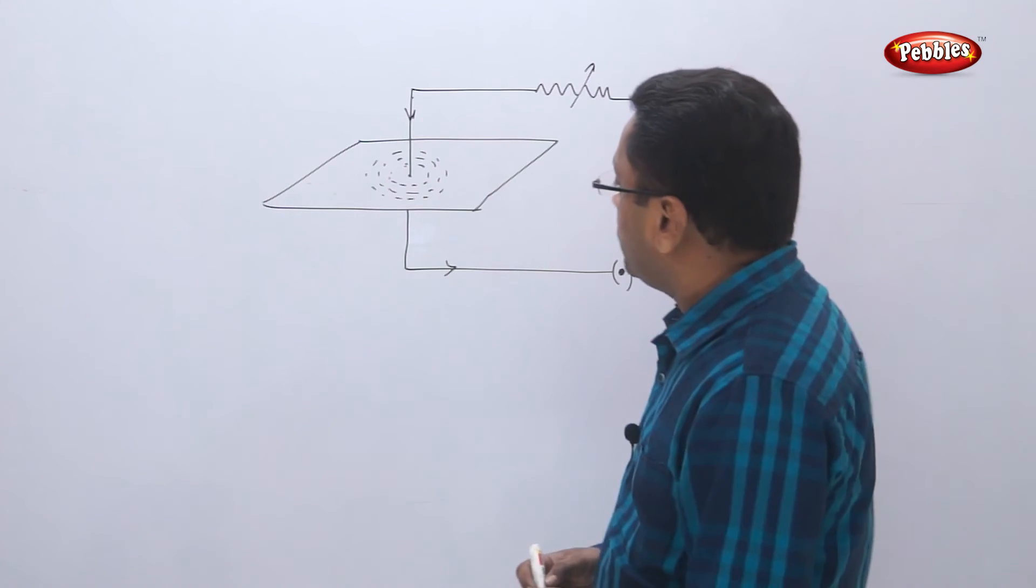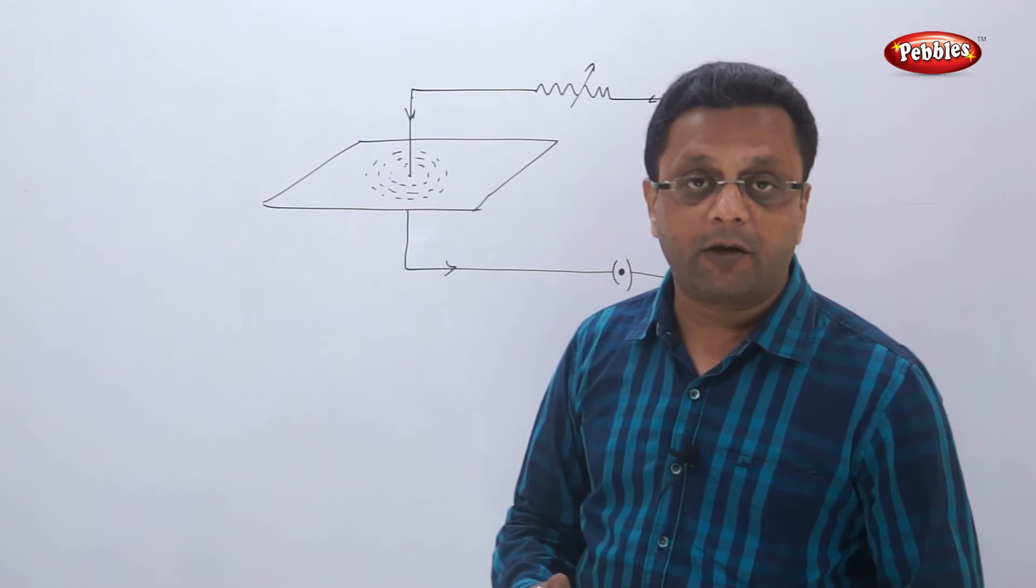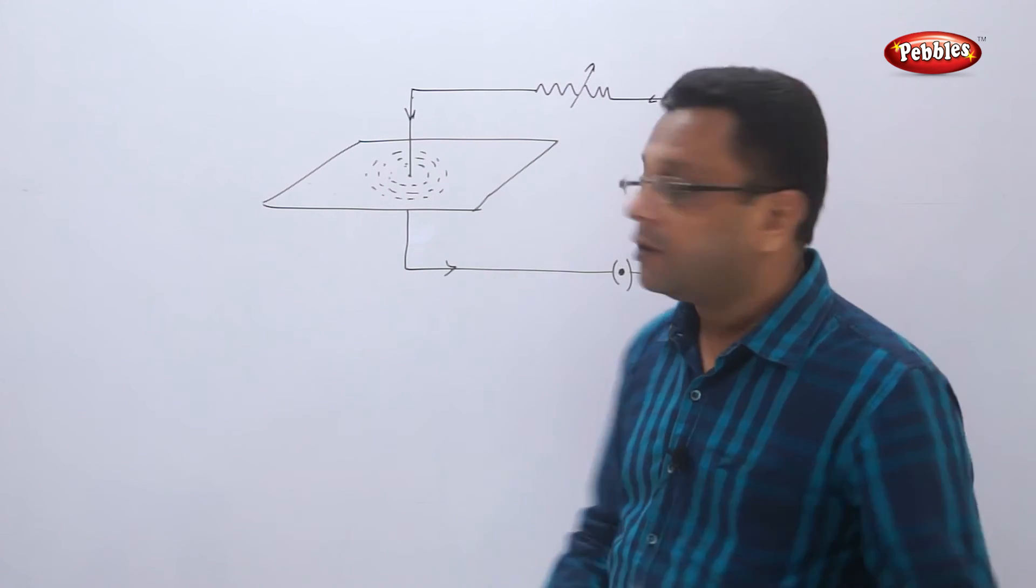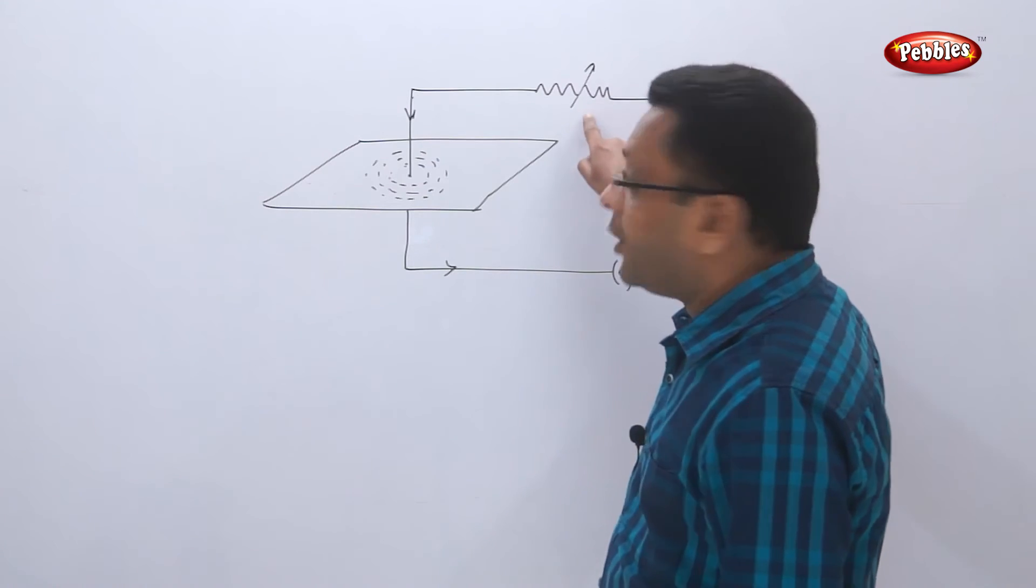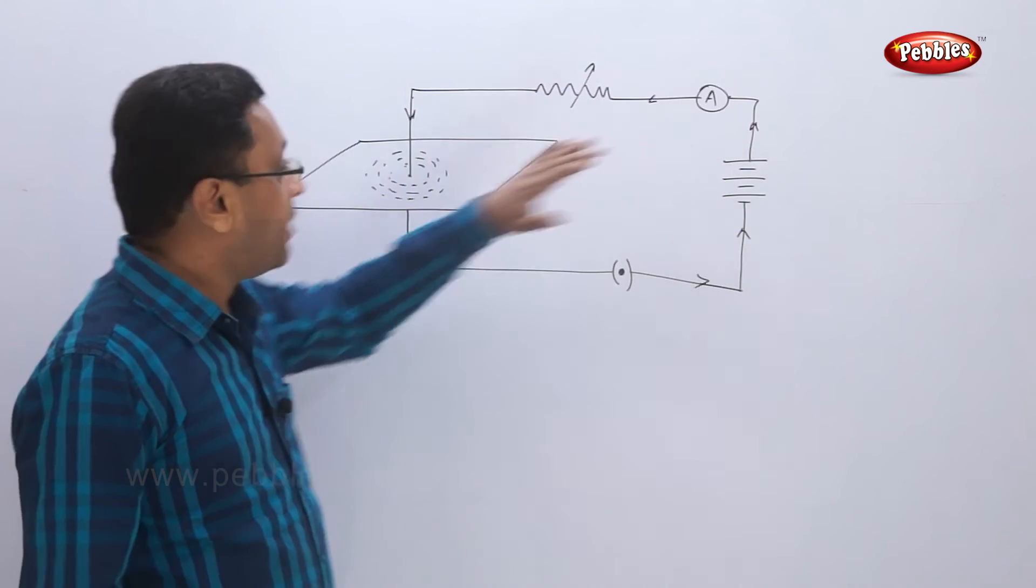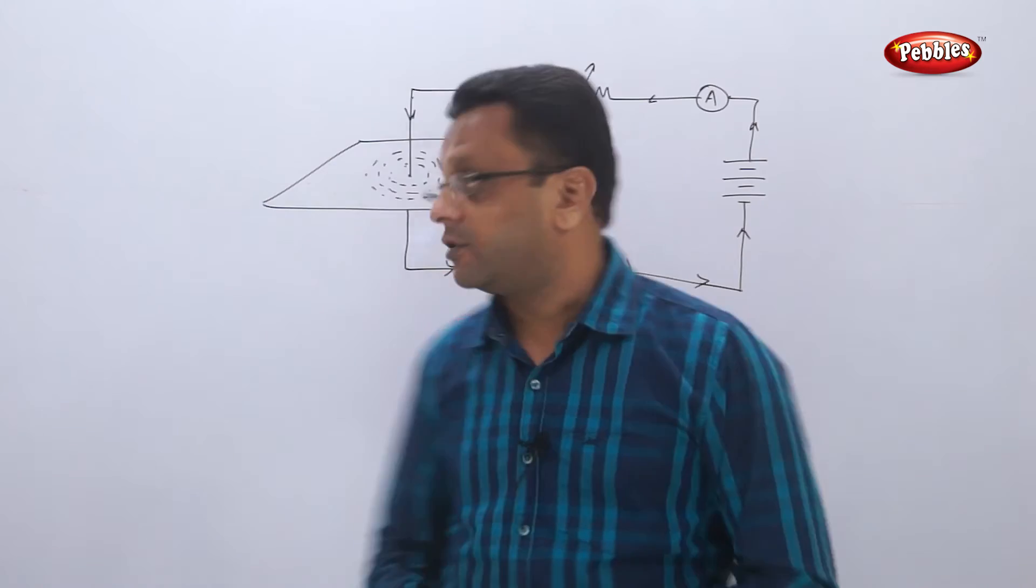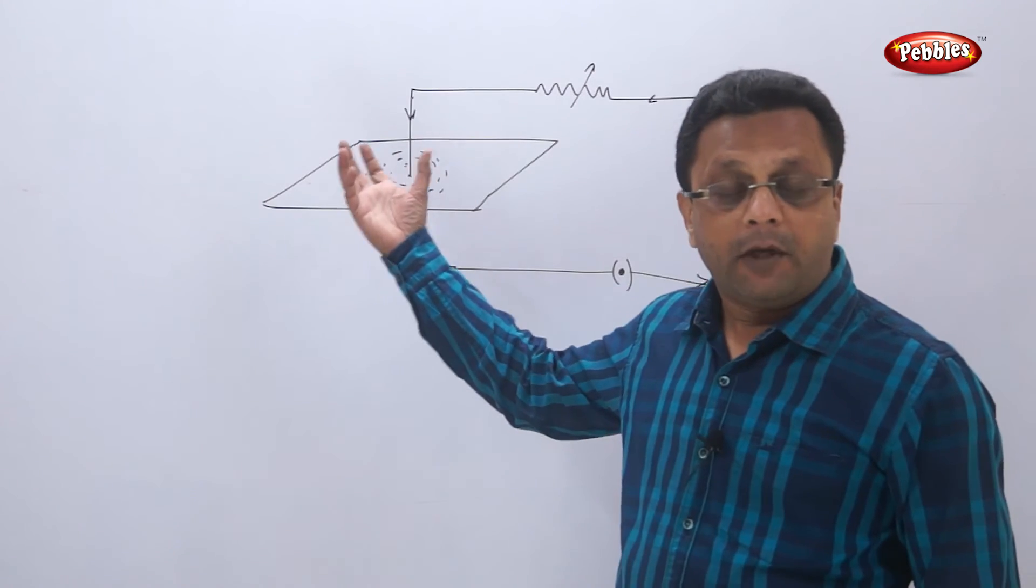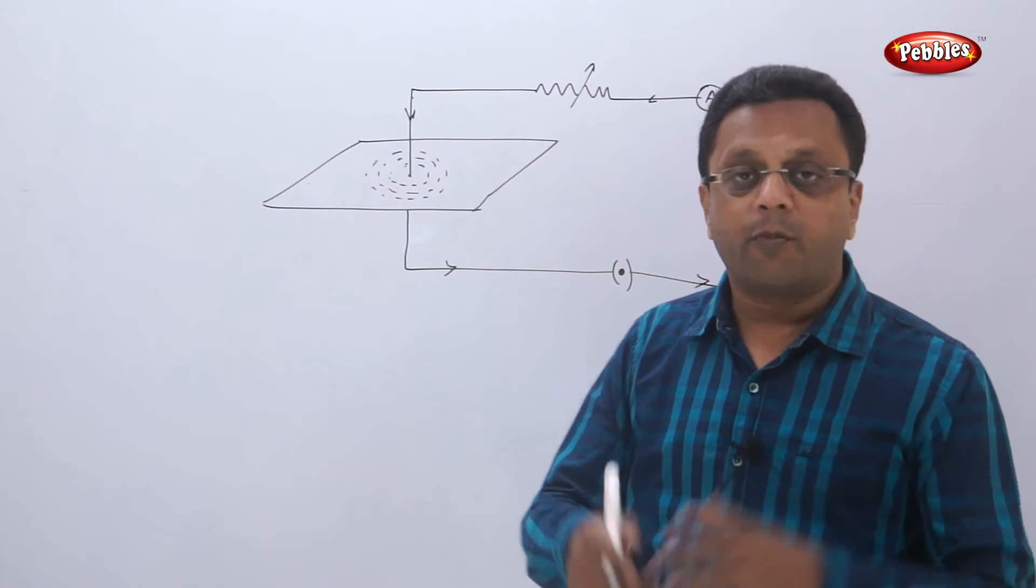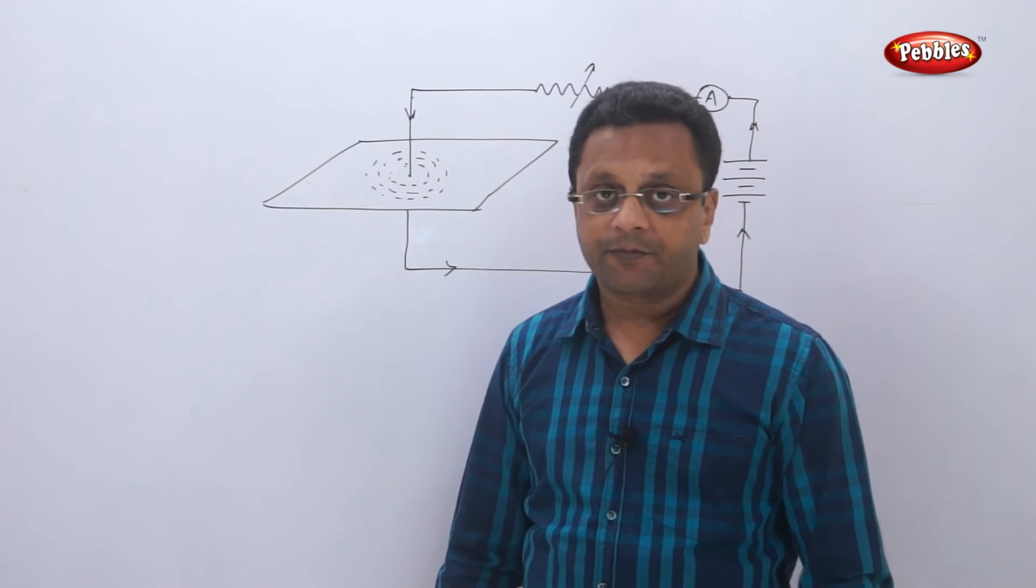Now, as we saw in the previous example, this magnetic field also depends on the current. If you reduce the resistance and increase the current, as the current goes on increasing, the magnetic field goes on increasing. That means this electromagnet will get more powerful if more current is passing through the circuit.